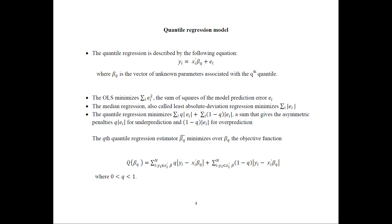The quantile regression model is described by the following equation: yi equals xi prime beta_q plus ei. Notice that instead of having one coefficient beta, now we have sets of coefficients, beta_q, where these coefficients are associated with the qth quantile of the dependent variable.